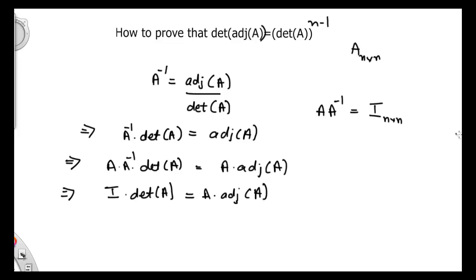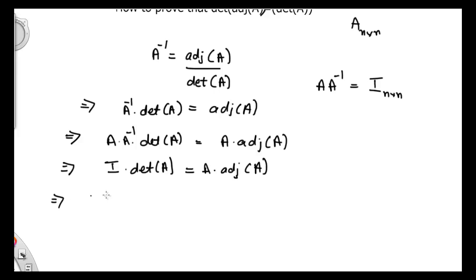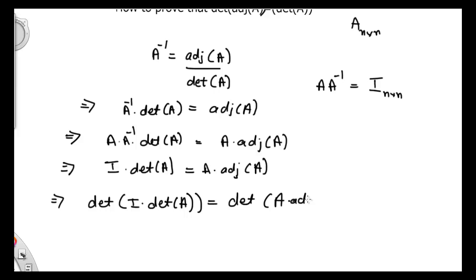Now let's take the determinant on both sides. So determinant of I dot determinant of matrix A is equal to determinant of A dot adjoint of matrix A. So this is the adjoint side — determinant of A dot adjoint of A, this whole side.